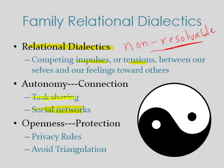Openness and protection is another dialectic. Openness is how much you like to share—we've talked about this with self-disclosure. Openness is associated with low risk perception, so you have high preferences for self-disclosure. Protection is more about low preferences for self-disclosure because you have a high sense of risk. Ways to manage this include privacy rules and family communication boundary management, which I asked you to review on your own. We'll also discuss triangulation, a niche but important topic within this subset of the dialectic, on a later slide.